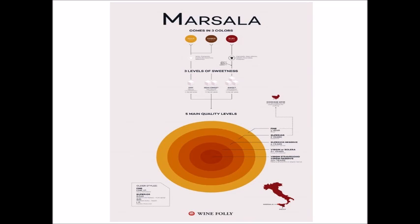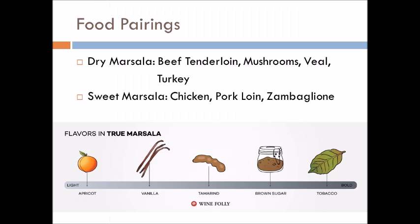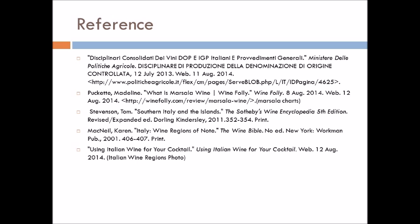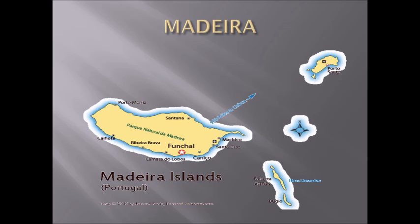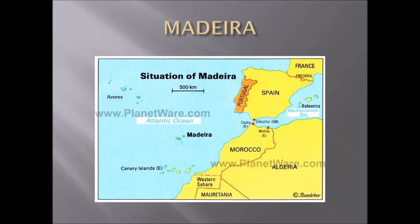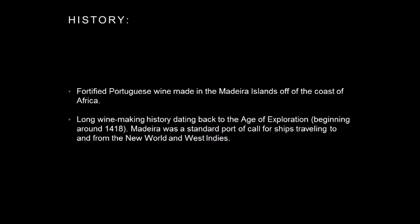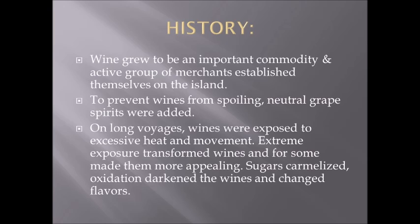Seven factors of Burgundy: location — eastern France, close to Champagne. Climate: continental — frost and hail are issues. Aspect: Côte d'Or — limestone and escarpment — slopes rated upper, middle, and lower. Soils: Chablis has Kimmeridgian; Côte d'Or has limestone, Bajocian, and granite. Viticulture: wide range of terrain; vines trained in Cordon, Guyot, and Gobelet.